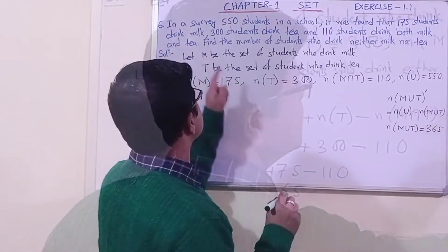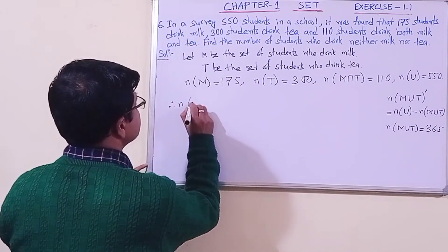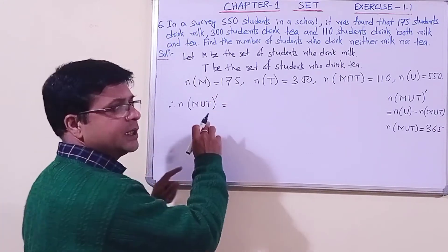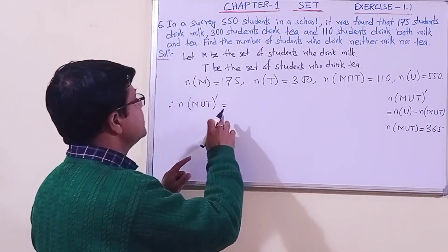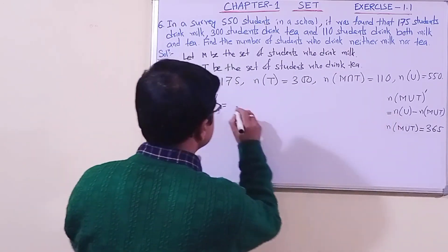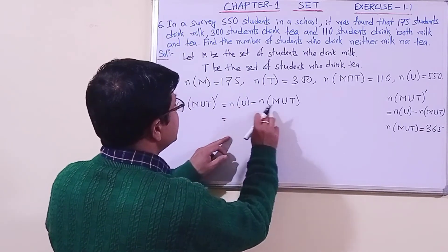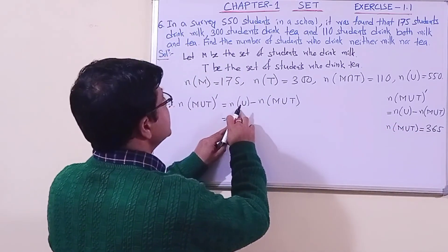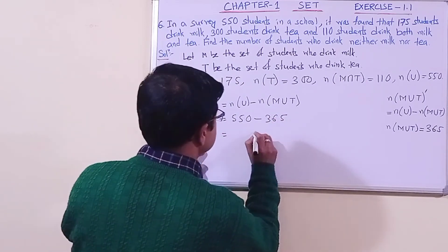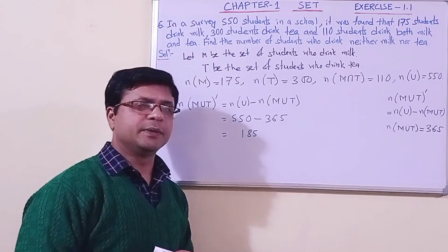Now let us find the number of students who drink neither milk nor tea. The complement of M∪T gives us neither milk nor tea. The formula is n(U) − n(M∪T). We already know n(U) = 550 and n(M∪T) = 365. So 550 − 365 = 185. The number of students who drink neither milk nor tea is 185.